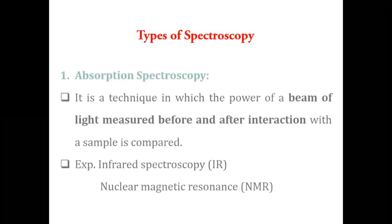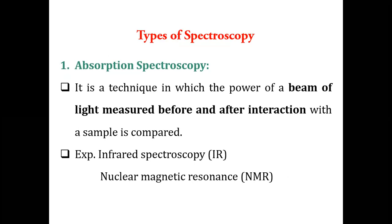Spectroscopy is mainly of two types: absorption spectroscopy and emission spectroscopy. Absorption spectroscopy is a technique in which the power of a beam of light is measured before and after interaction with the sample and then compared. You measure the radiation before applying it to the sample and again after — the change between them is studied. If some matter interacts with the radiation, the radiation energy will change, and that is what is measured in absorption spectroscopy.